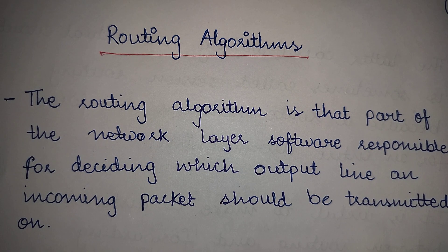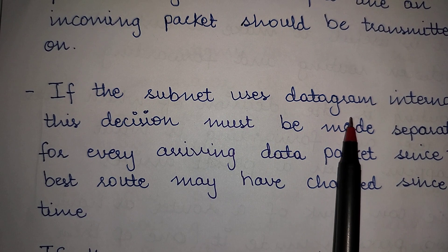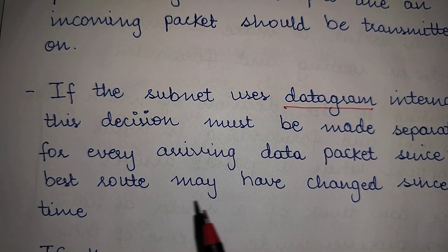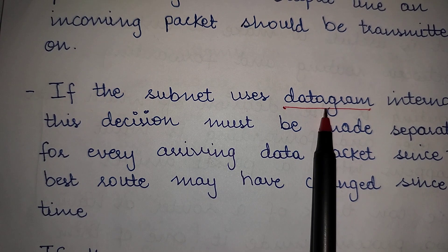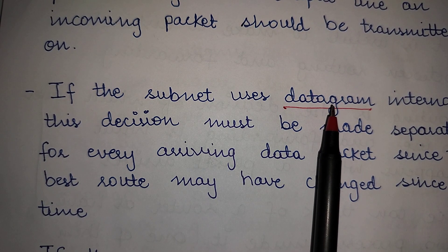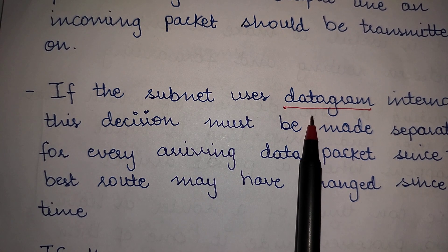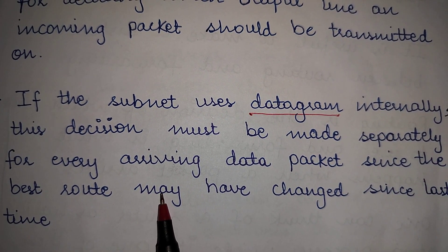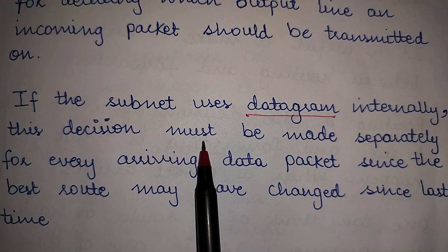The routing algorithm decides among all available output lines which one has to be chosen. If this subnet uses datagrams internally, then this decision must be made separately for every arriving data packet. Datagrams are used in case of connectionless services, where no dedicated path is established. So if the subnet is using datagrams, this decision is made separately for every data packet.